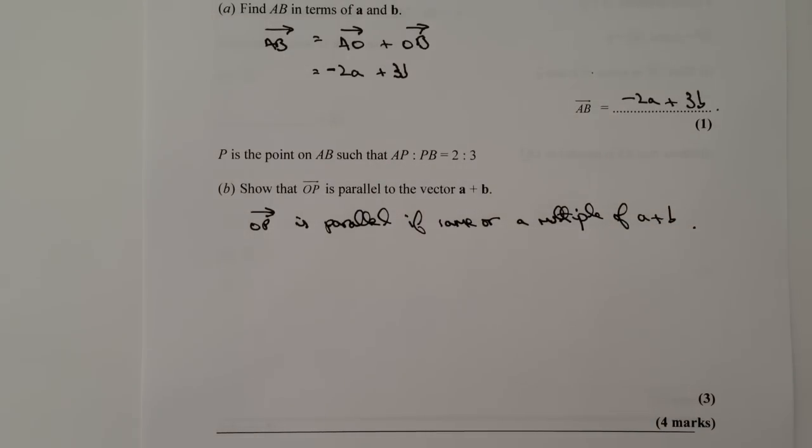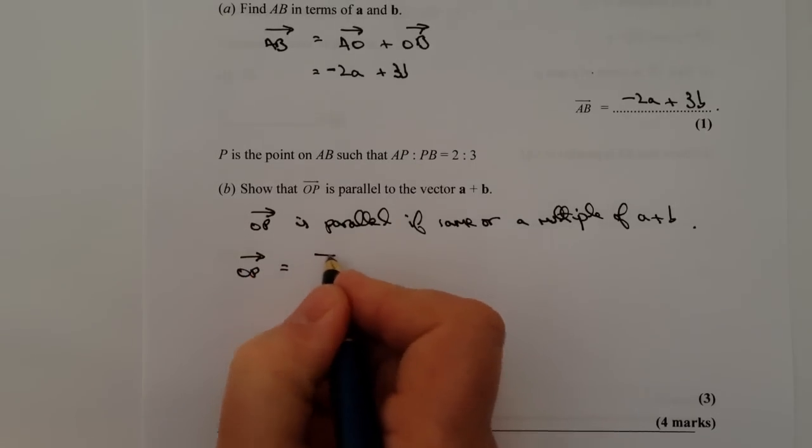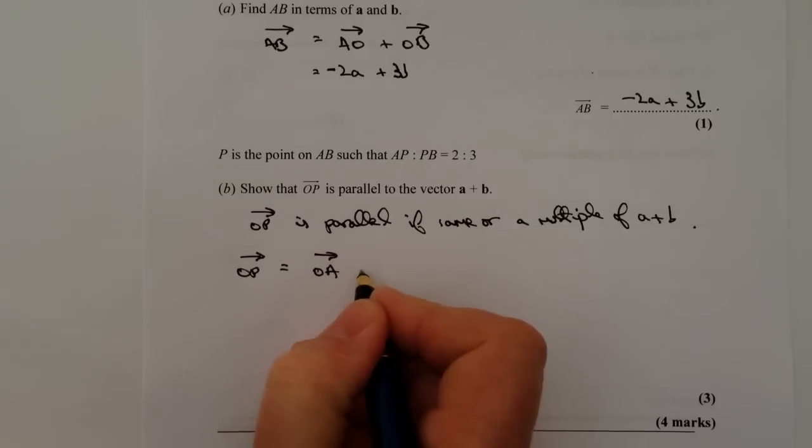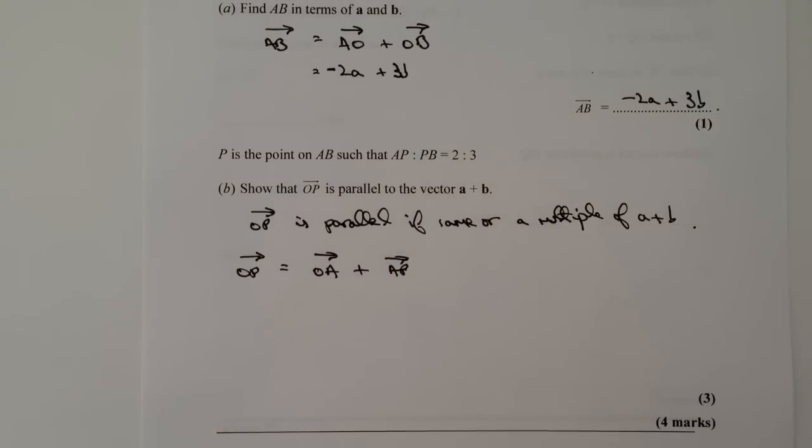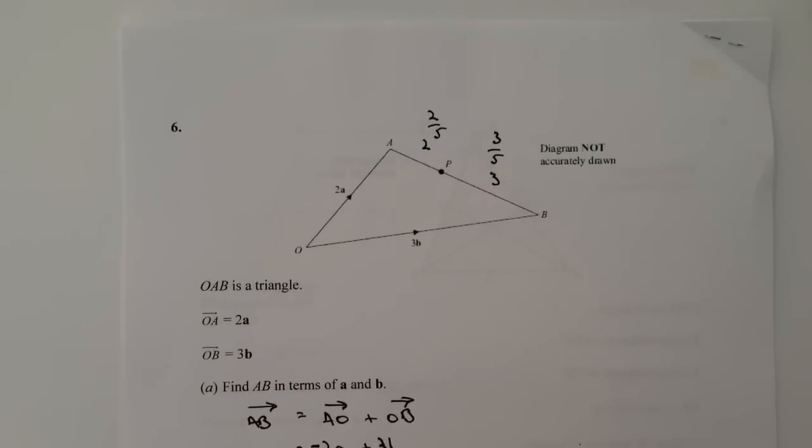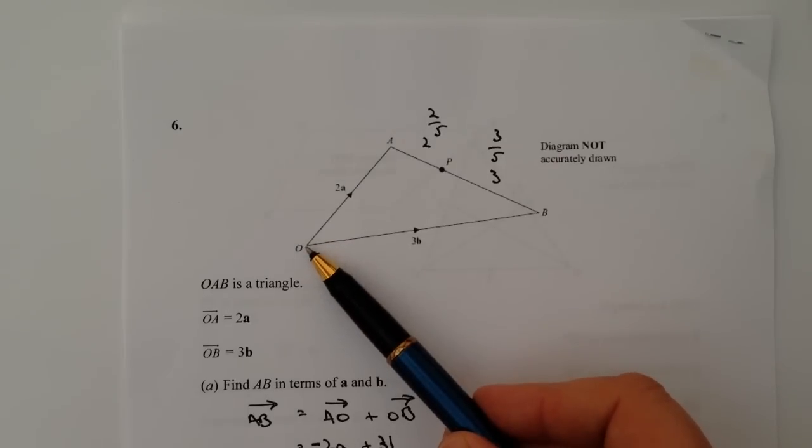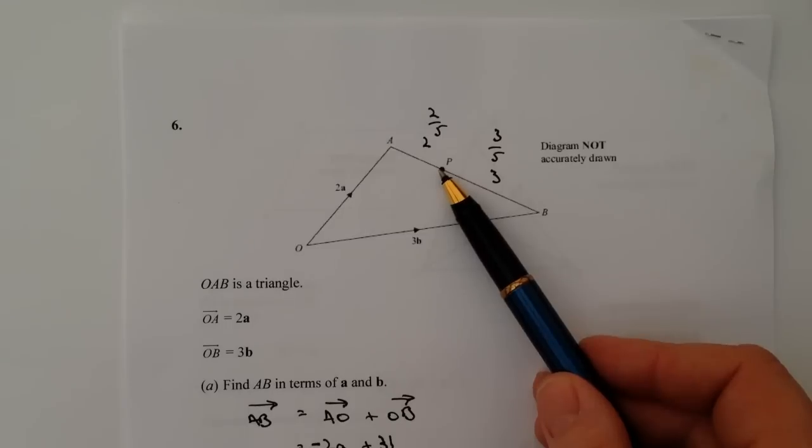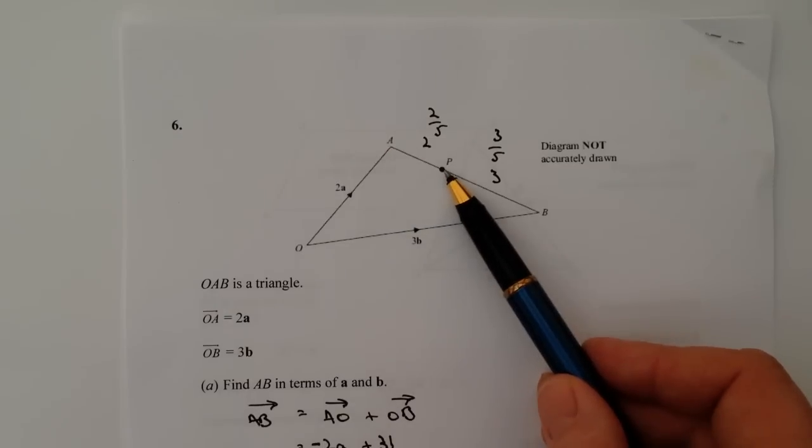OK, so let's have a look and see if we can find vector OP. Well, again, if you refer to the diagram, we've got vector OP and that's going to be equal to OA plus vector AP. So if we go back to the diagram itself, O to P is what we're looking for. Now, we don't know anything about that vector, but we do know that we can go along OA and then down AP.